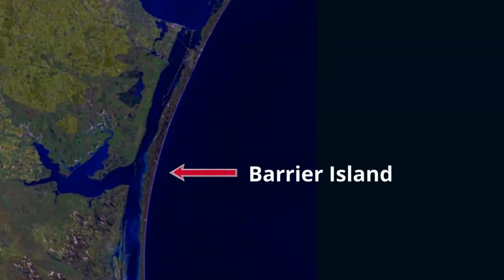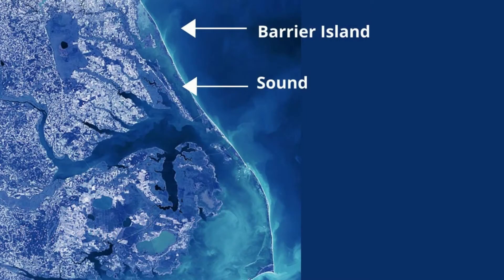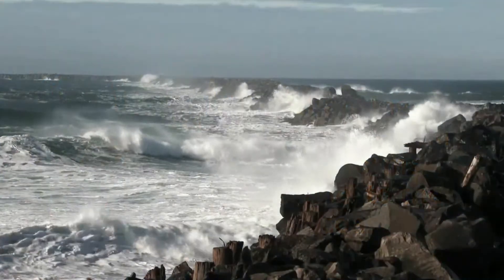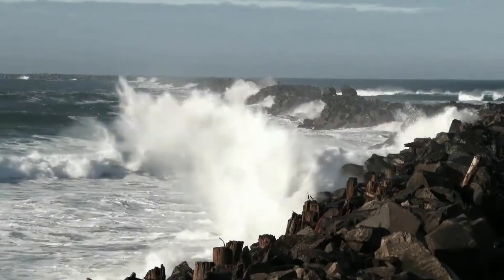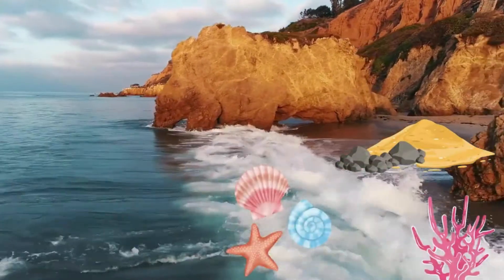A barrier island is a long, narrow island that runs parallel to the mainland coast. It is separated from the mainland by a body of water, such as a lagoon or a sound, which is a relatively narrow body of water between the mainland and an island. Barrier islands are formed by sediment that is transported by waves and currents from the mainland. They protect the mainland from erosion and storm surge. Waves carry a variety of materials such as sand, rock, dead corals, and shell.